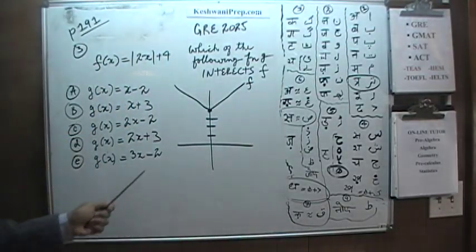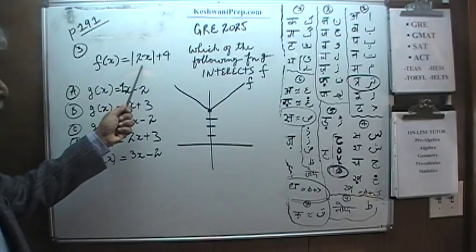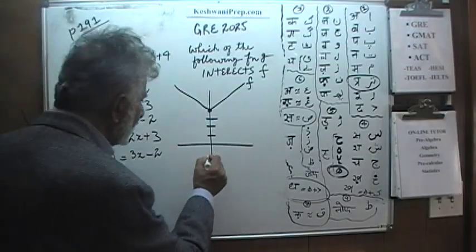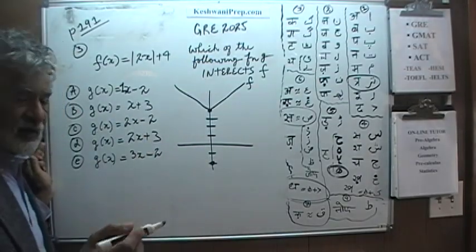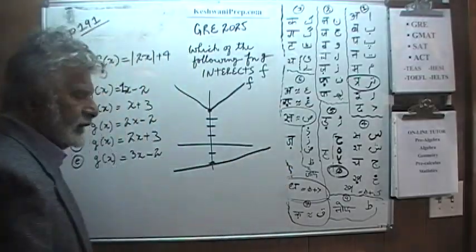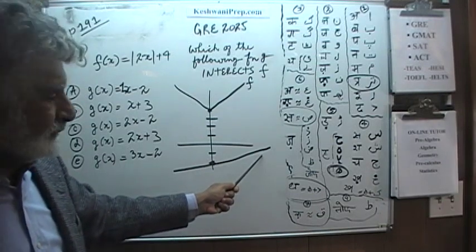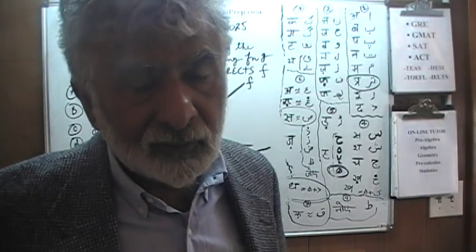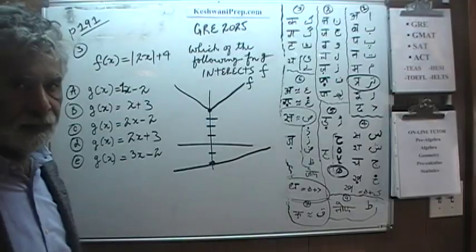Our job is to locate a function g that will intersect this graph. Let's start with answer choice A. This has a slope of 1, while f has a slope of 2 — so f is steeper than this one. It doesn't matter where it starts; it starts at negative 2. But A will never intersect f, because no matter how far out you go, they go farther and farther apart — this has slope 2, and that has slope 1. A line with slope 1 will never intersect a graph with slope 2.